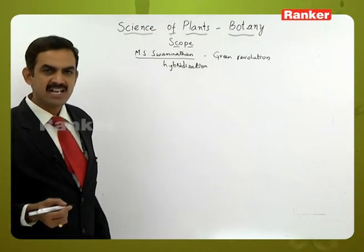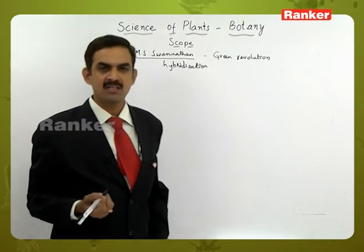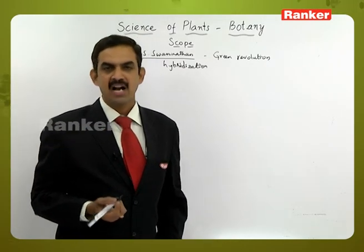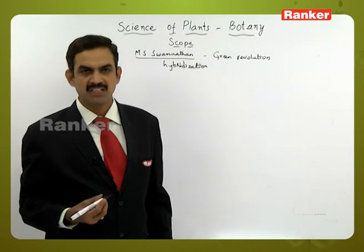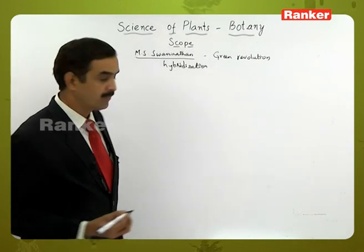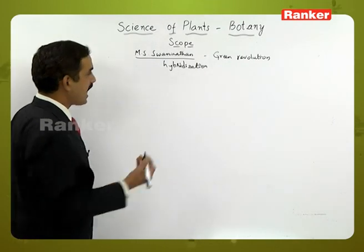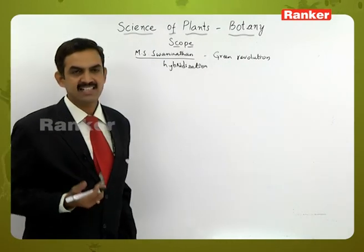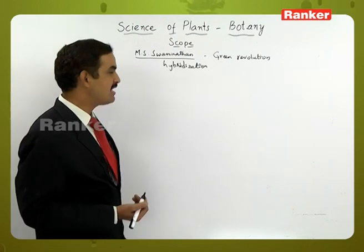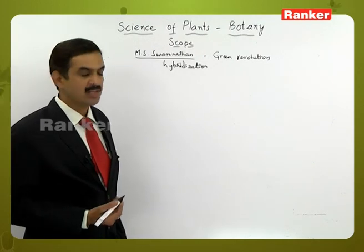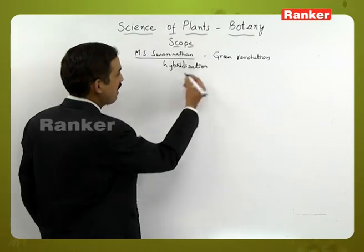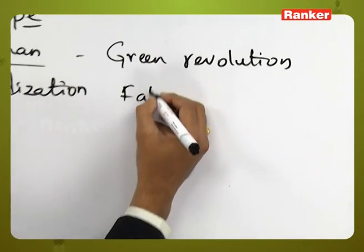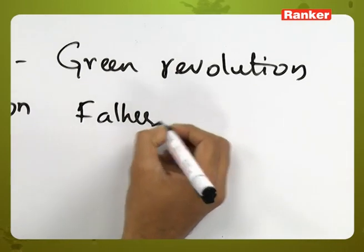He later used the same concept to increase the production of rice and some commercial crops. That is how crop production increased through the Green Revolution, and Swaminathan is called the father of the Green Revolution in India.